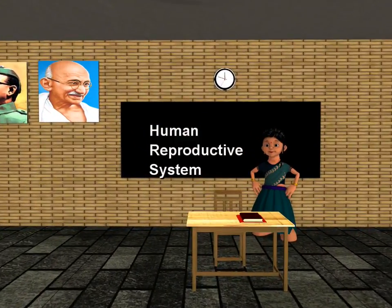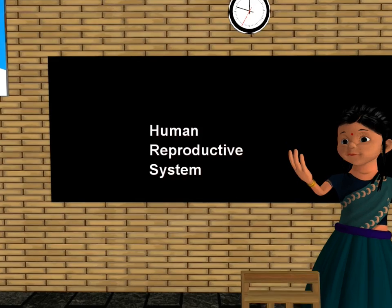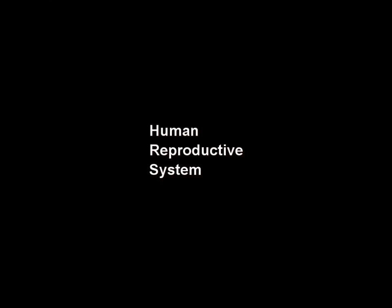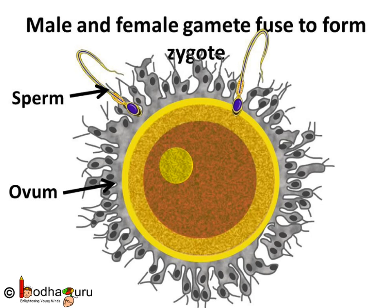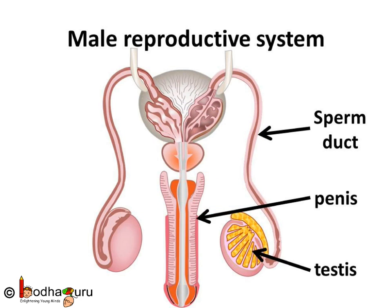Good morning children. Today we shall learn about the reproductive system in human beings. The type of human reproduction is sexual reproduction, which means the male gamete fuses with the female gamete to form a zygote during the reproduction process. Then the zygote grows and turns into an embryo. Let us learn about the reproductive system in detail.